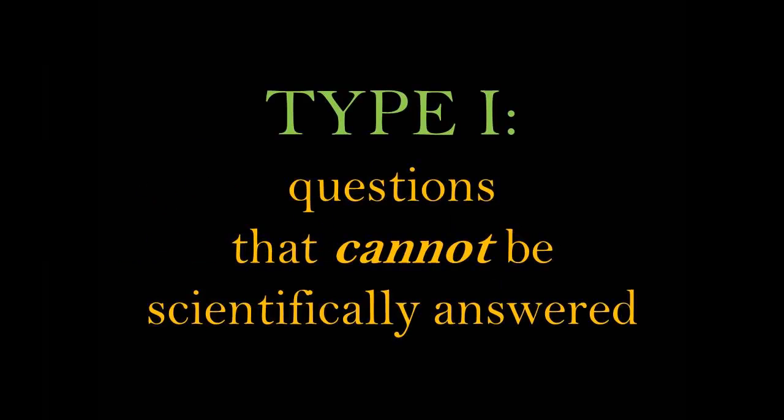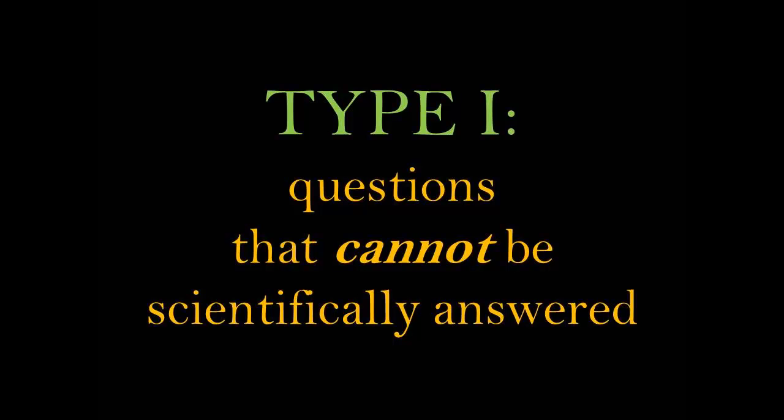First, let's look at questions that are not answerable by scientific research. These are Type 1 questions. These questions are either asking for information that we cannot obtain, or are questions of values, where there is no absolute.